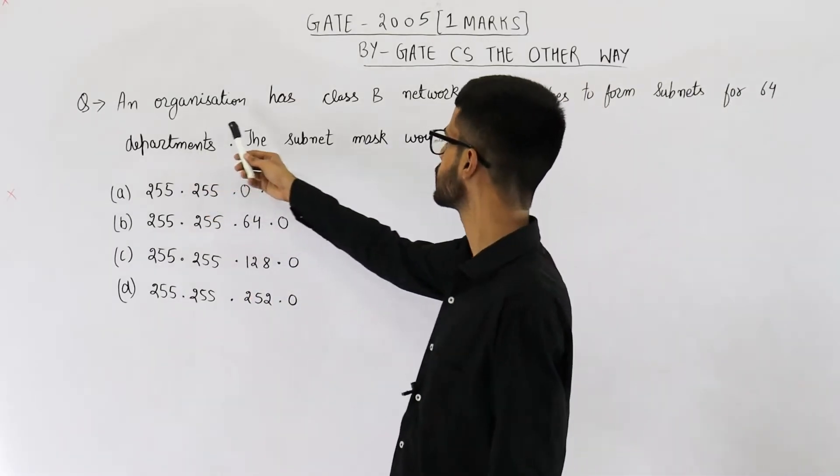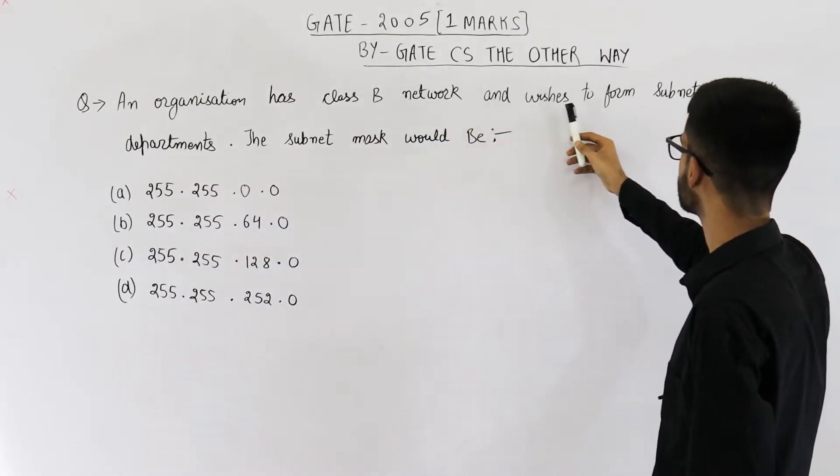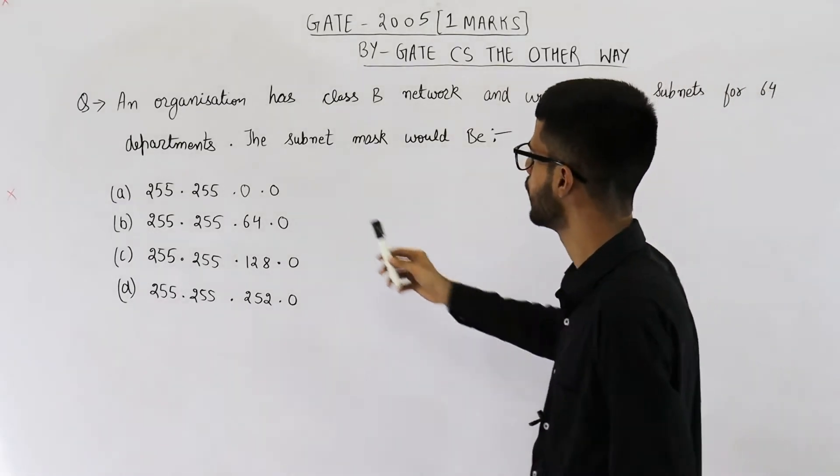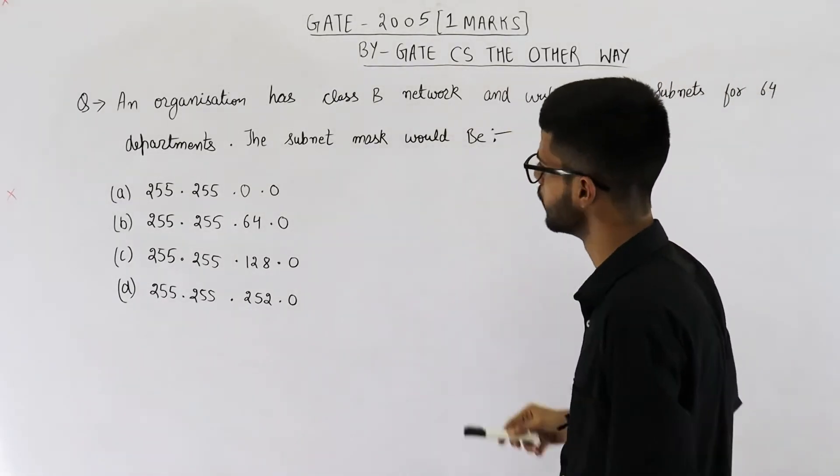This one is for one mark. They are saying, an organization has class B network and wishes to form subnets for 64 departments. The subnet mask would be?